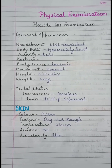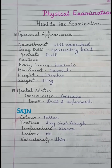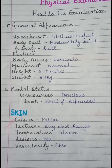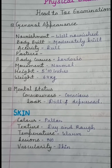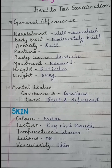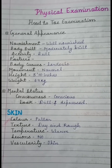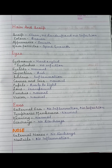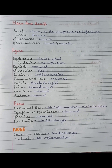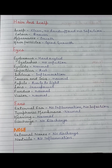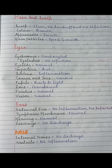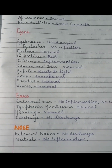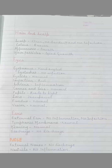Then we start physical examination, which is called the head-to-toe examination. First we write about general appearance, which includes skin texture, followed by hair and scalp. Then we write about the eyes, eyebrows, eyelashes, ears, and nose.